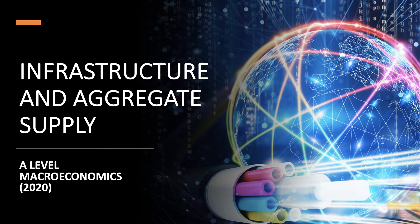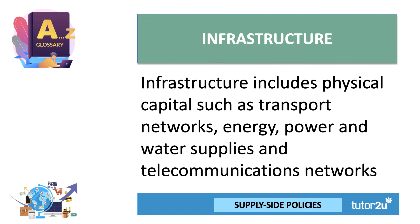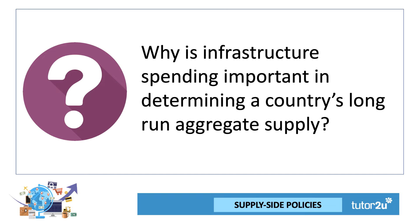Hi there and welcome to a video on aggregate supply. For the next few minutes we're going to focus specifically on the importance of infrastructure. Infrastructure includes physical capital — tangible capital such as road and rail and air networks, energy systems, power networks, the water supply and sewage systems, telecoms and other forms of hard, critical infrastructure. Why is infrastructure spending important in determining a country's long run aggregate supply?